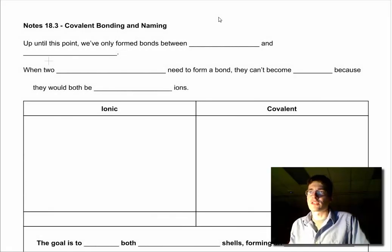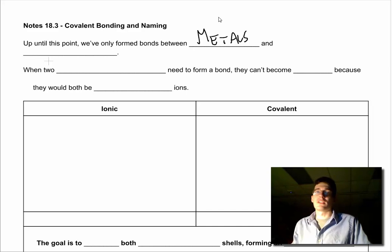Hey everyone, welcome back. Mr. Bennett here. We're going to do a quick section on covalent bonding. Up until this point, we've only formed bonds between metals, elements on the left side of the periodic table, and non-metals, elements on the right side of the periodic table.